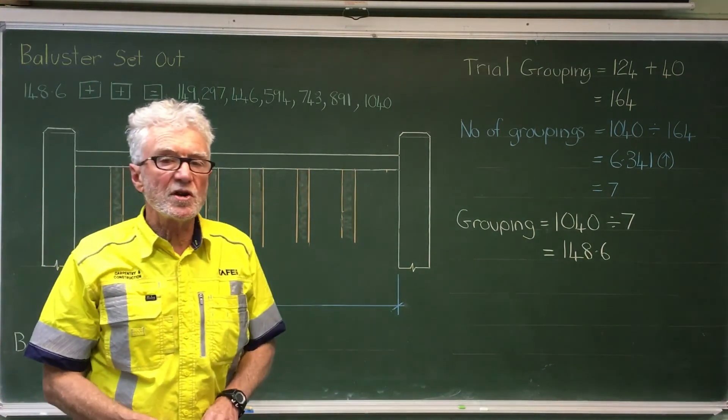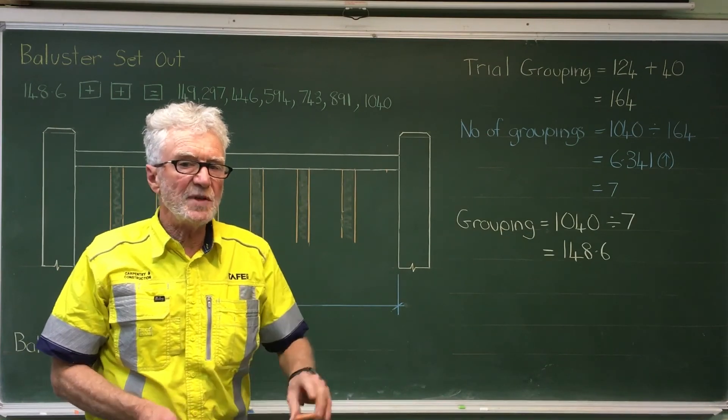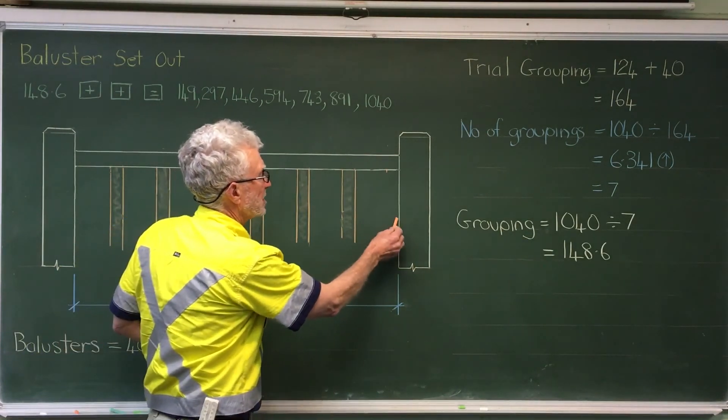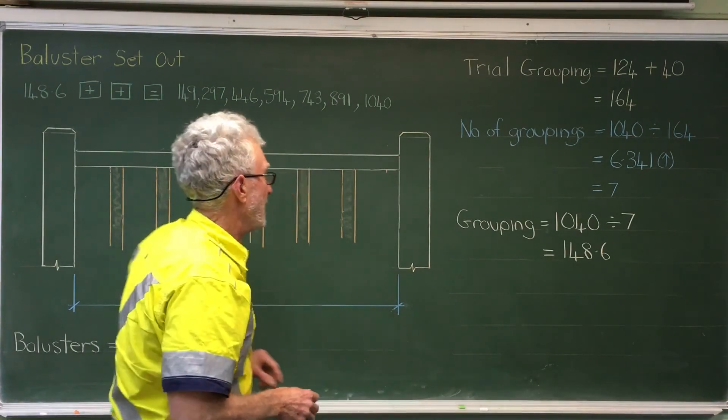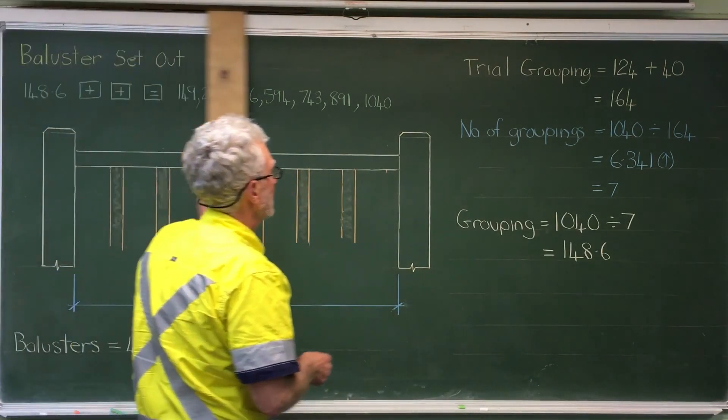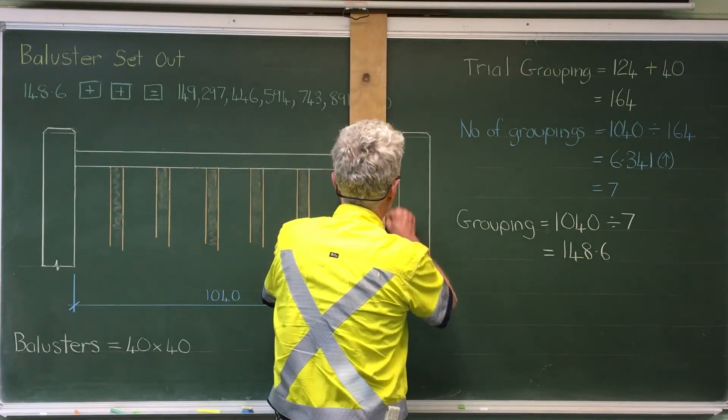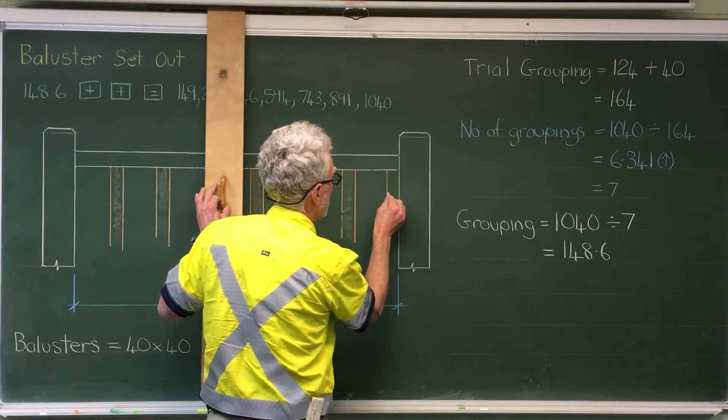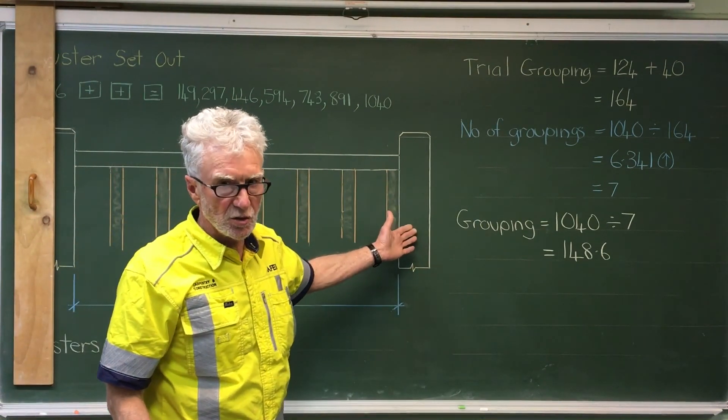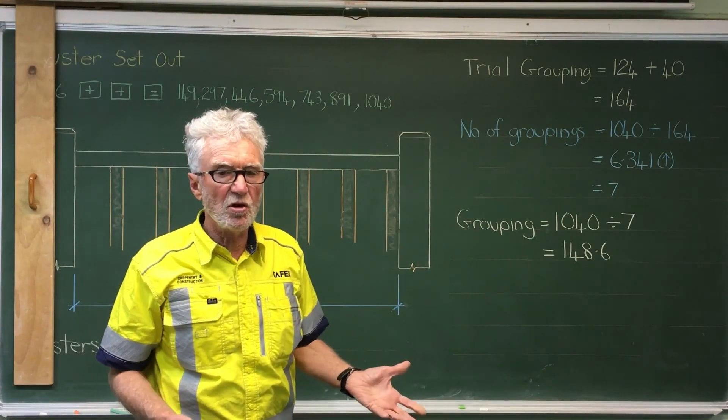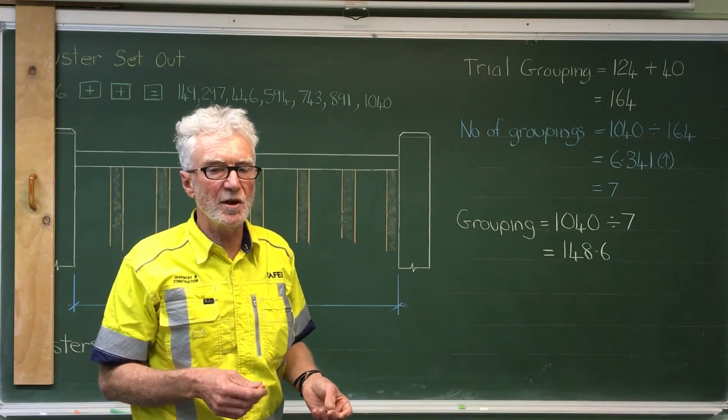So we've gotten to that position and something's looking wrong. This gap is clearly bigger than 124. We could put the next baluster in, but we don't want a baluster directly against the newel. Something's gone wrong. We need a different way to do the maths.